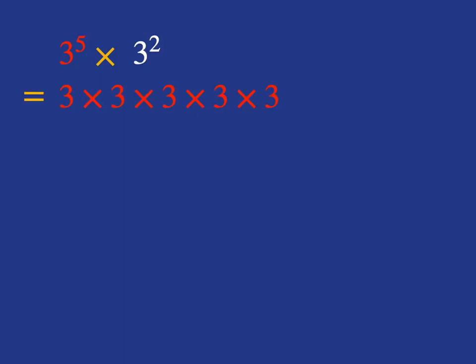It's 3 multiplied by itself 5 times. What's 3 squared? It's 3 times 3. And so what do we have in total here? We've got 5 threes and another 2 threes multiplied together. So in total we've got 5 plus 2, which is 7 threes multiplied together.